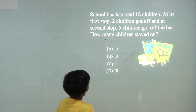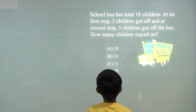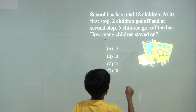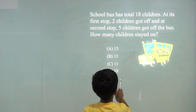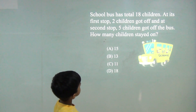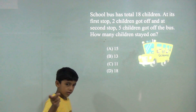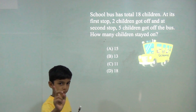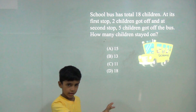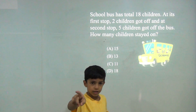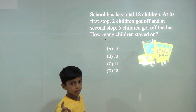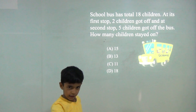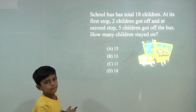The school bus has a total of 18 children. At its first stop 2 children got off and at the second stop 5 children got off. How many children stay on the bus? So we will do 18 minus 7. 8 minus 7 is 1, and 10 plus 1 is 11. So the answer would be 11.